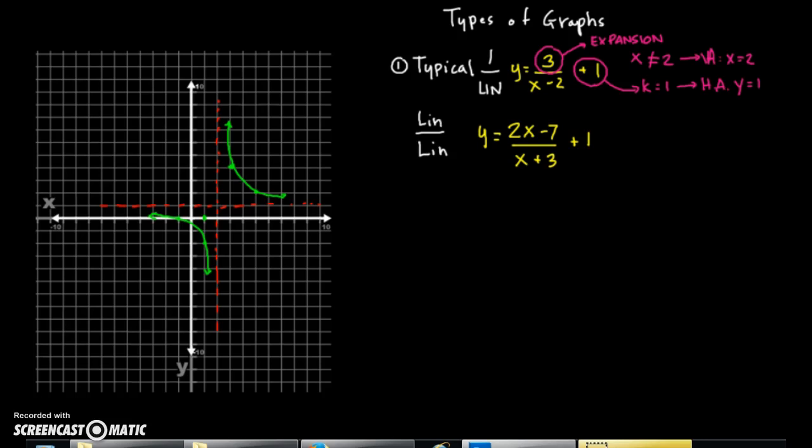What you can see there is that the three provides us with an expansion. Really what you're looking at is transformations. There's nothing really scary about this. It's all transformations. The three is a vertical expansion and we can get some points with that. But most importantly, what we realize is that we can't have x equal to two at the bottom because otherwise we're dividing by zero. That also provides us with our vertical asymptote. You can see over here I put it in already, x equals two.